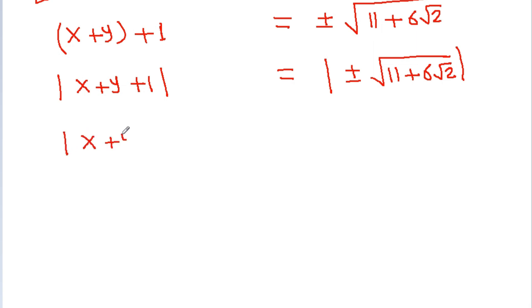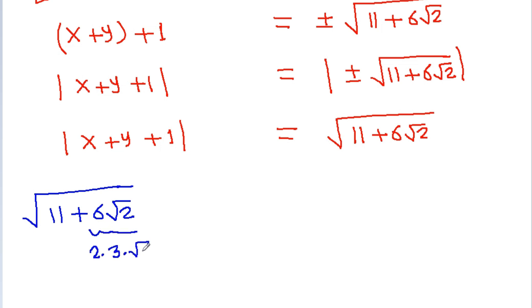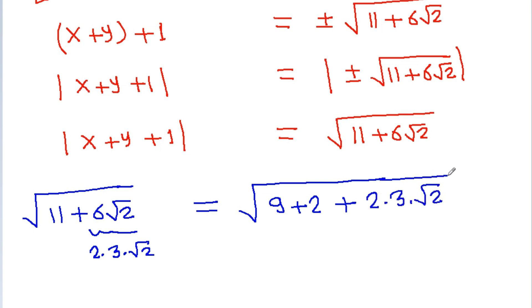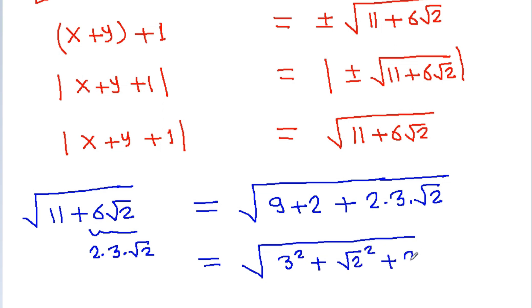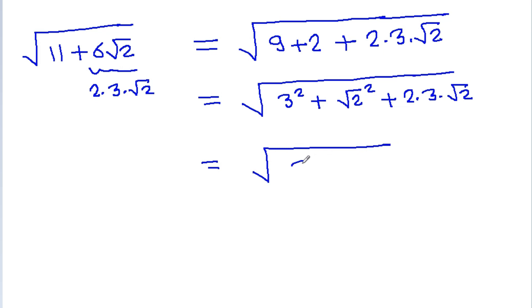Mod of x plus y plus 1 is equal to square root of 11 plus 6 root 2, since the modulus removes the plus or minus. Now, 6 root 2 is 2 times 3 times root 2, so it can be written as square root of 11, which is 9 plus 2, plus 6 root 2 which is 2 into 3 into root 2. This gives square root of 3 square plus root 2 square plus 2 into 3 into root 2, which is square root of 3 plus root 2 whole square, equal to 3 plus root 2.